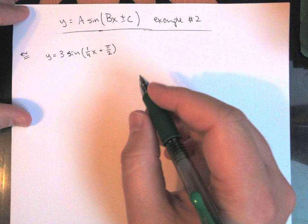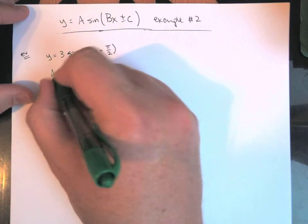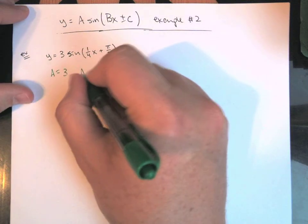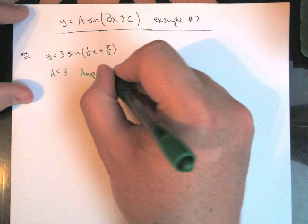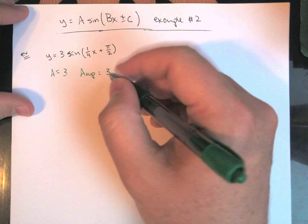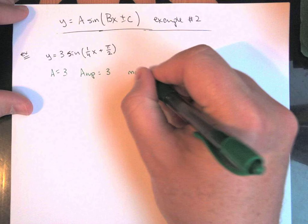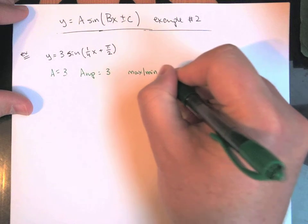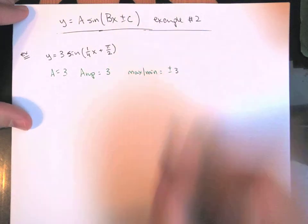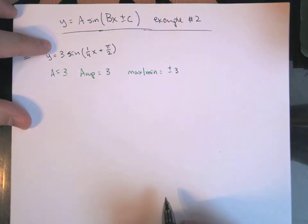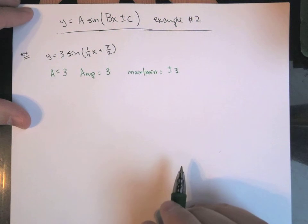Let's run everything through. Our A value here is 3, so that means our amplitude is 3. It's positive, right? I mean, in theory this is the absolute, but we know it's positive so we'll just write it that way. So our maximum and minimum values are going to happen at plus minus 3.